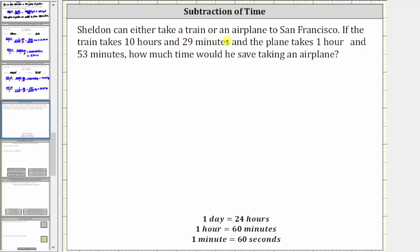Sheldon can either take a train or an airplane to San Francisco. If the train takes 10 hours and 29 minutes and the plane takes one hour and 53 minutes, how much time would he save taking an airplane?